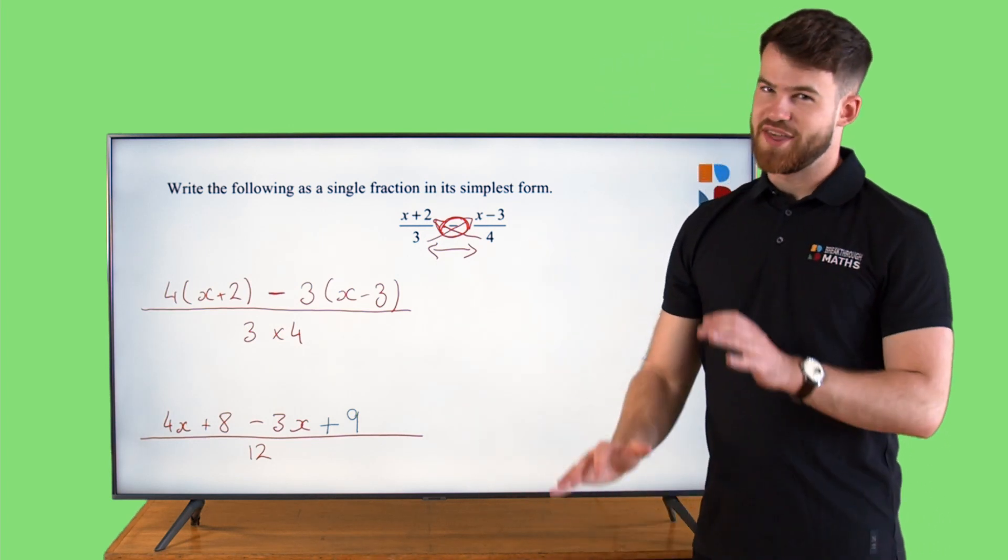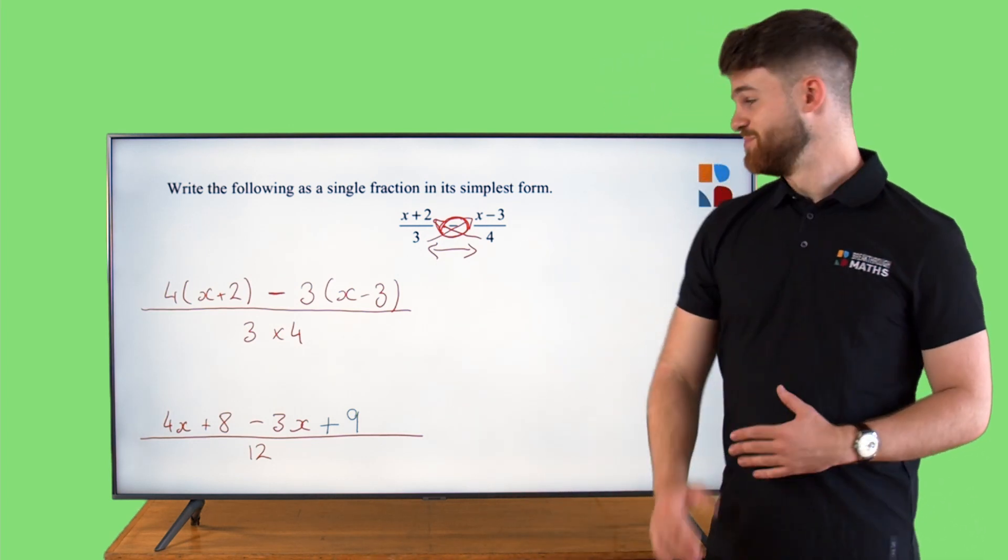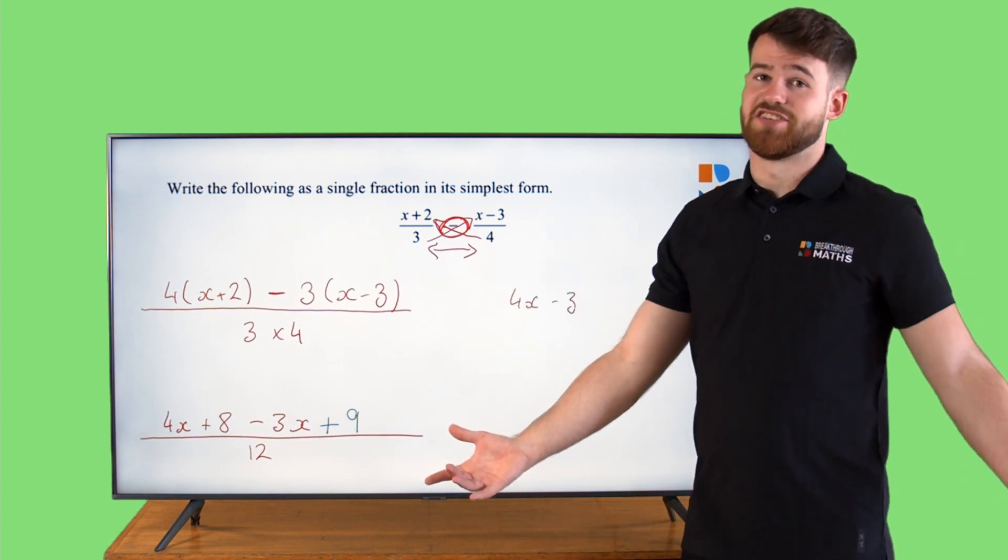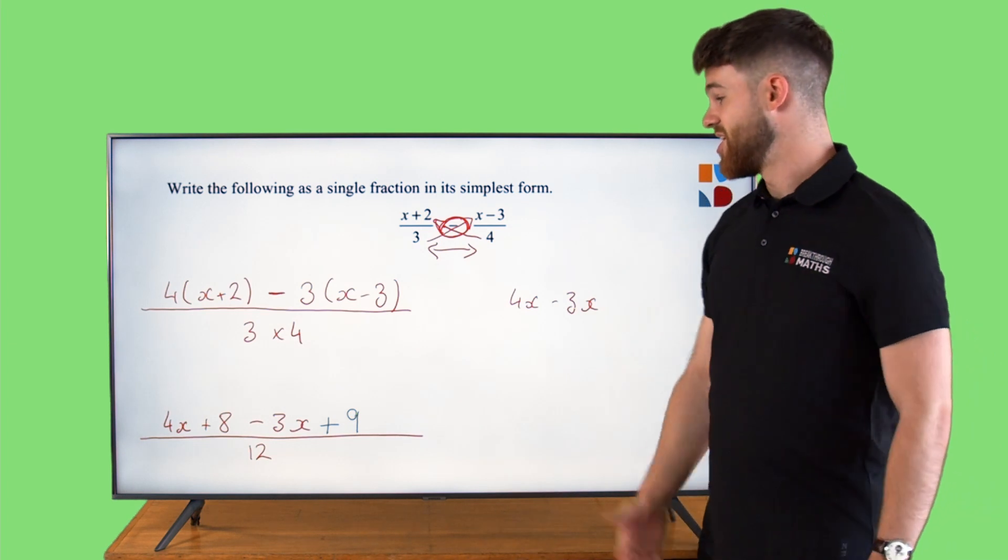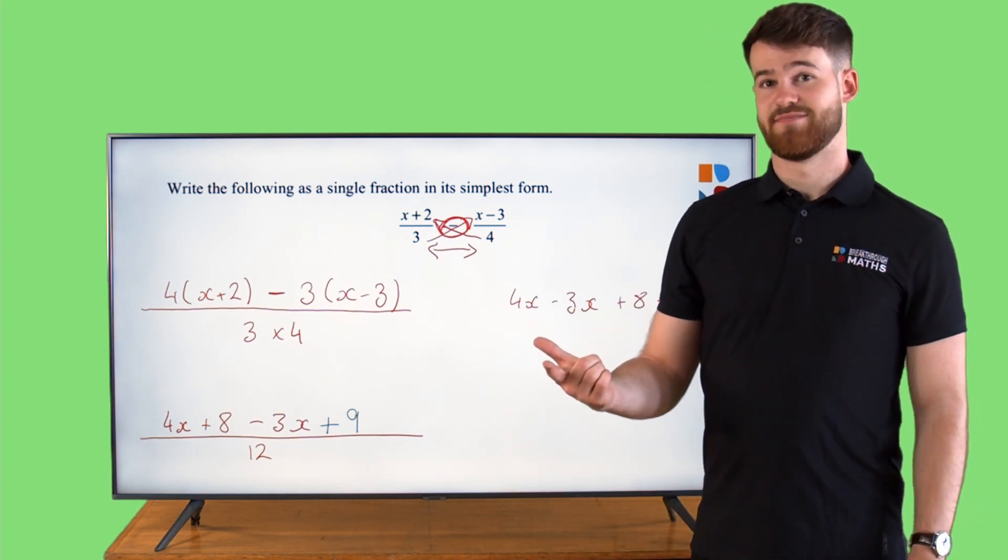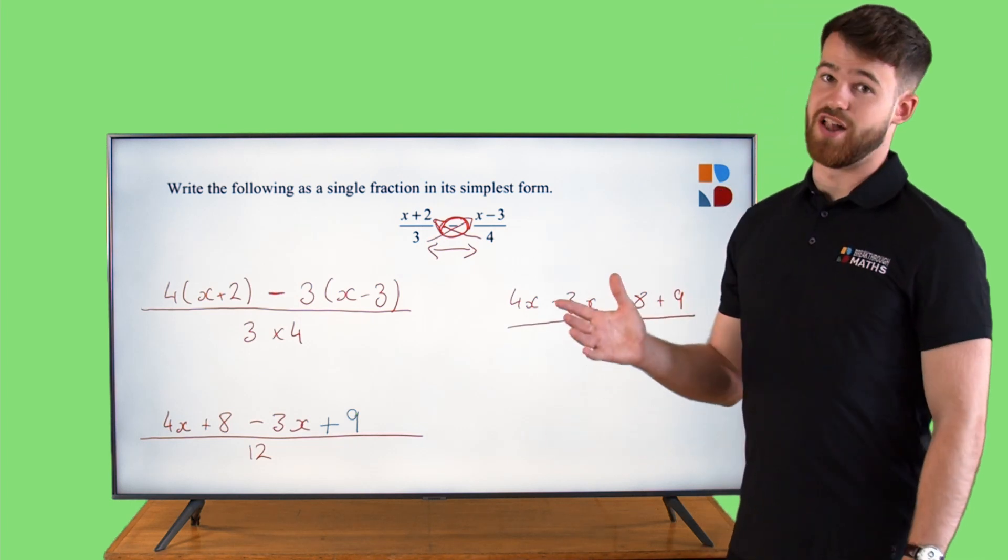If we simplify things down here you'll see it's starting to look a little bit similar. 4x minus 3x, that's just going to give us x. 8 plus 9 will give us 17. And right on the bottom will leave us with 12.